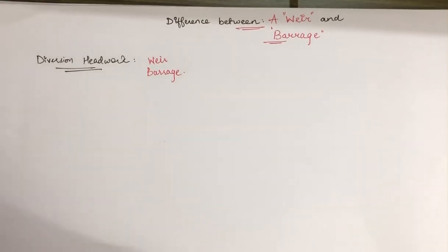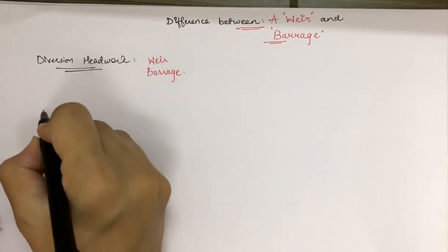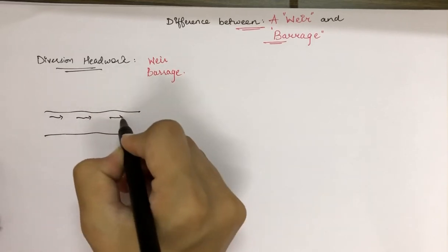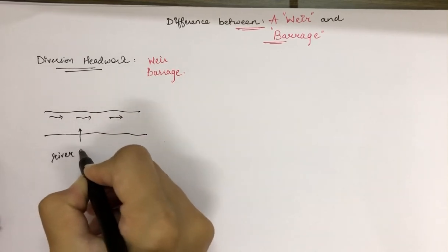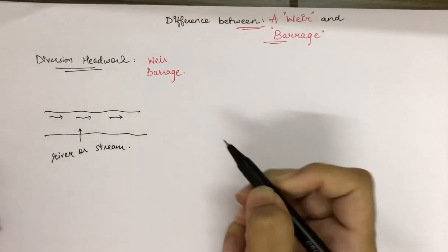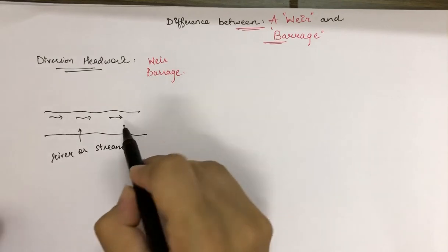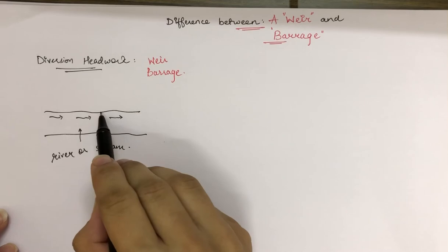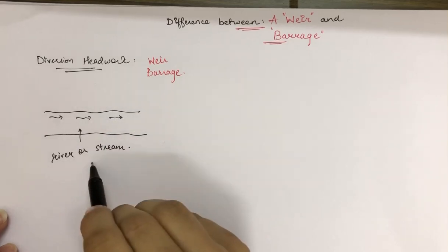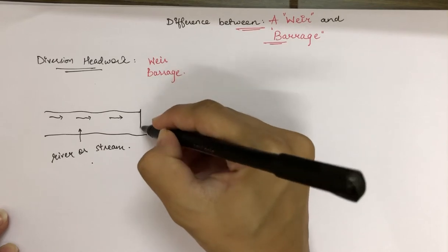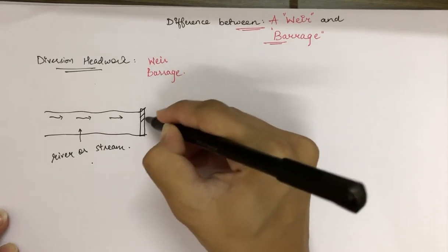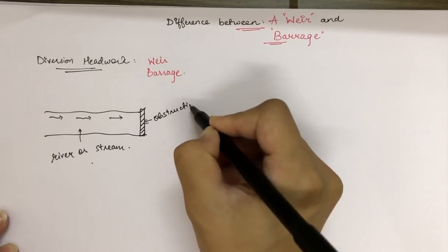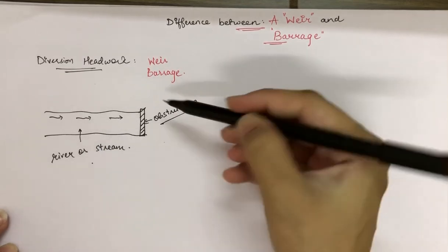Let me show you with a picture. If this is the river — or we can consider it as a stream — which is flowing in this direction, and if we want to increase the water level of this river and divert it into another canal on either side, then what we need to do is put some obstruction across the river.